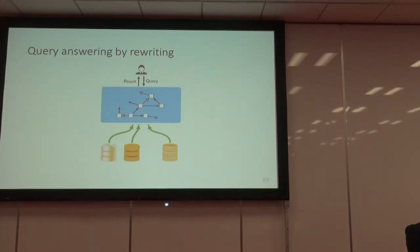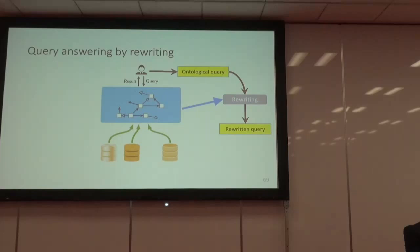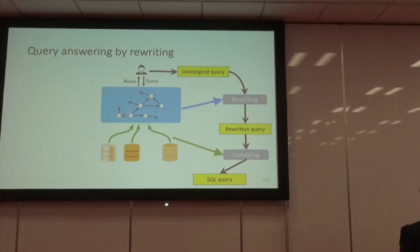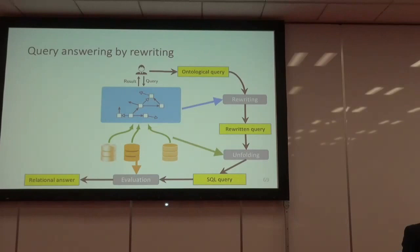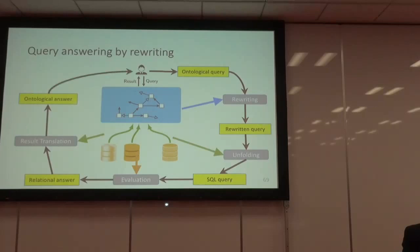The process works as follows: the user formulates a query in terms of the ontology. First, the semantics of the ontology is compiled into the query through a step called rewriting — the query gets enriched to provide more answers taking into account ontology semantics. The rewritten query is then processed using mapping information to produce an SQL query evaluated over the data sources. The relational answer is translated back using mappings into an answer expressed in the ontology language that the expert understands.